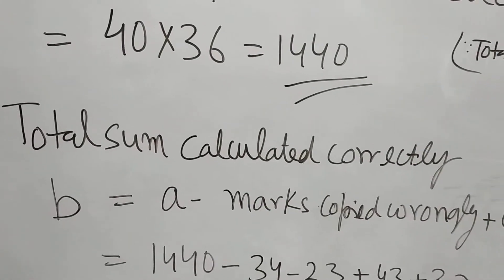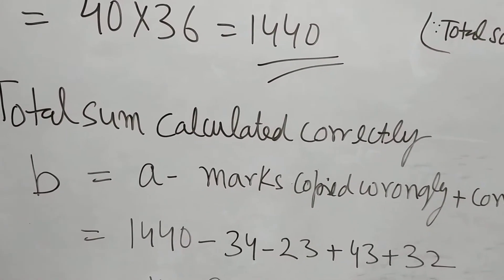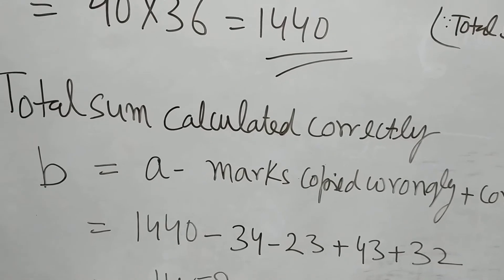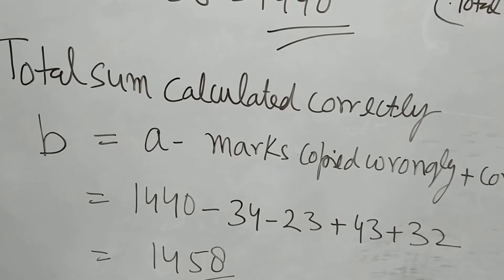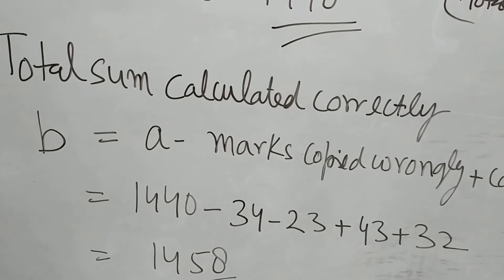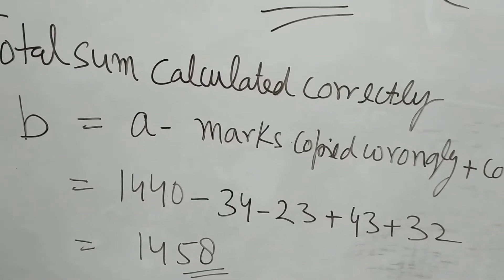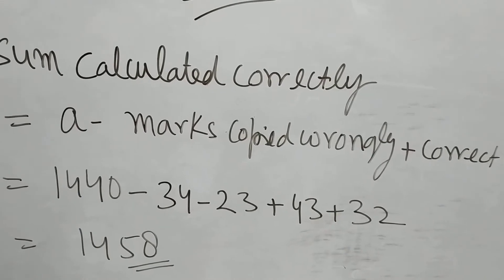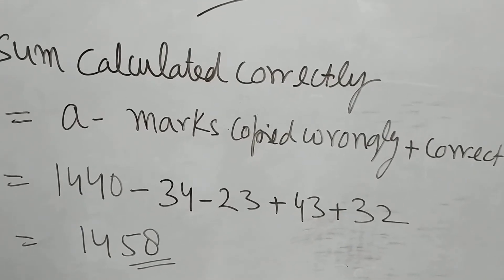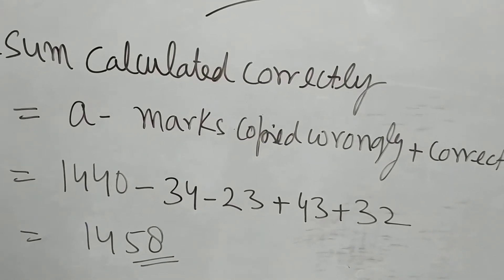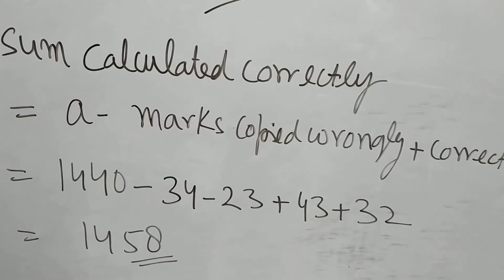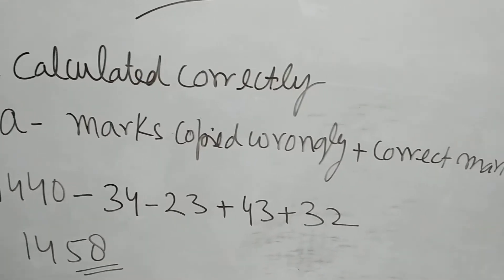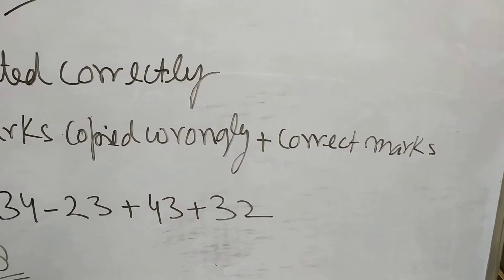Now total sum calculated correctly. Let it be a value that we can call B. B equals A minus marks copied wrongly. That means the marks which were copied wrongly have been deducted, and the correct marks were added.